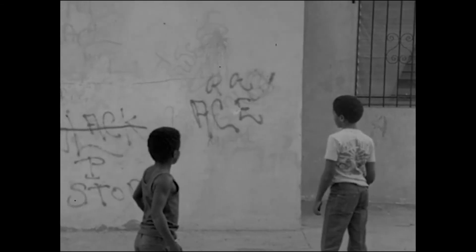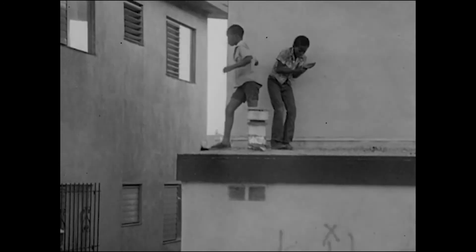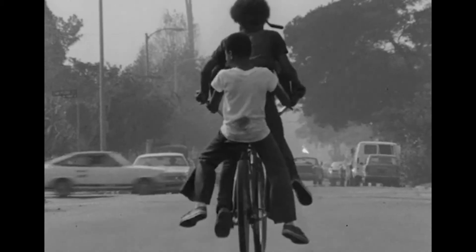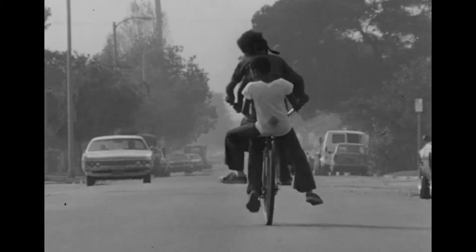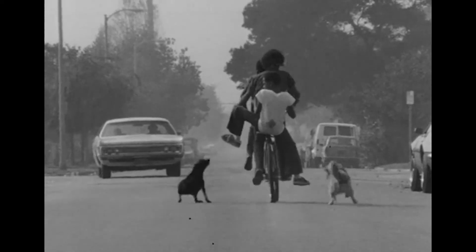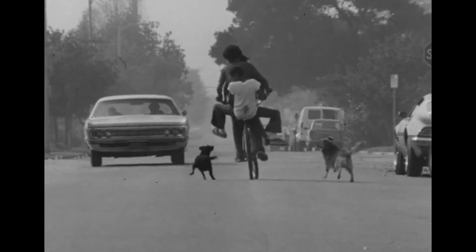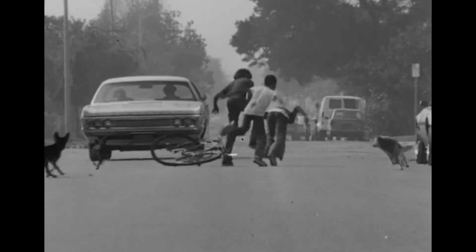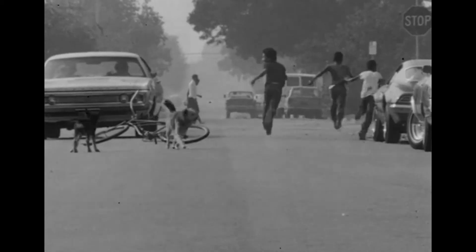The camera's initial movement toward the boy doesn't introduce him as a character, but seems to respond to something that happened spontaneously. Or take this moment, when the boys are riding on a bicycle and then a dog runs up to them — a seemingly unstaged encounter with a neighborhood dog that by definition has no awareness of the cameras or the fiction being constructed.